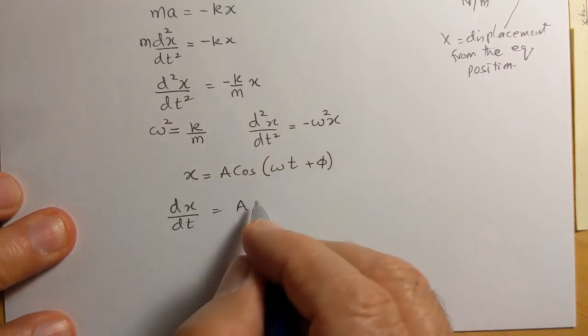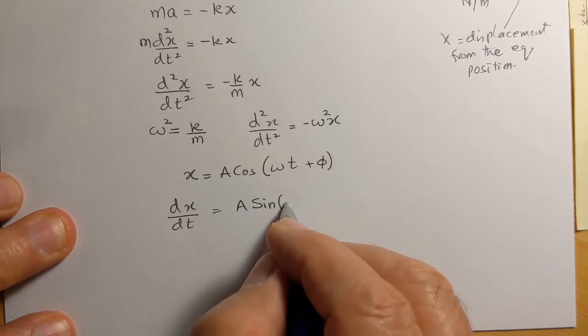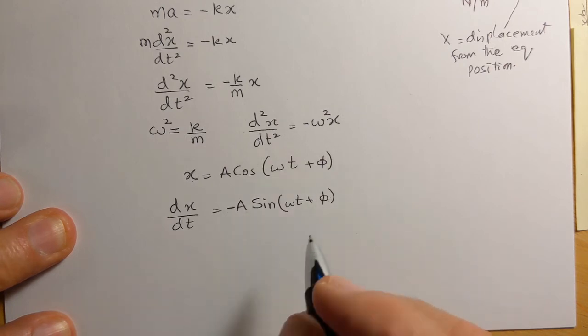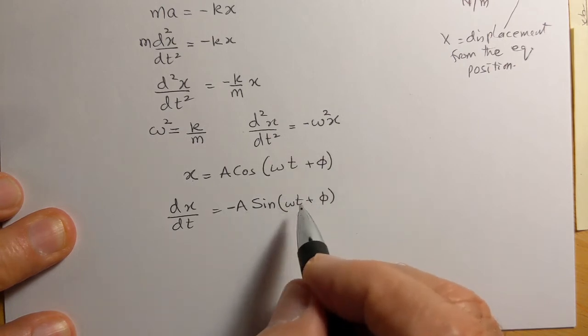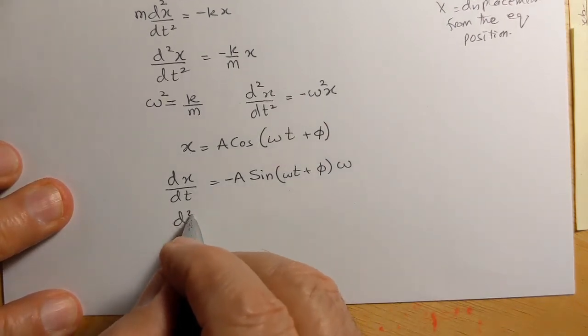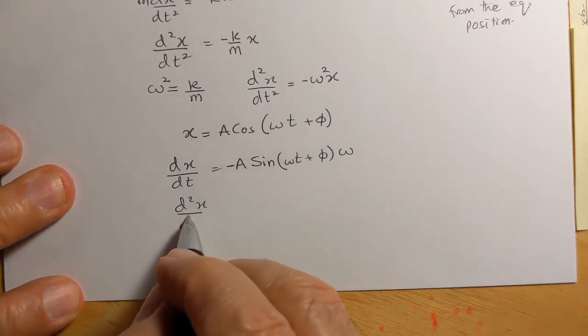which will be A, and the cosine will have a derivative of sine(ωt + φ) with a negative sign, and then the derivative of what's inside, which is ω. And then the second derivative d²